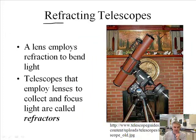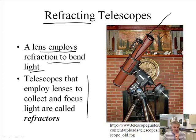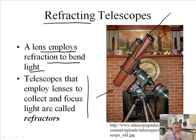So how does a refracting telescope work? A refracting telescope employs a lens and uses refraction to bend the light. Light comes in, passes through the lens, which then focuses the image so you can collect it. Telescopes that employ lenses to collect and focus light are called refractors — this would be a refracting telescope.